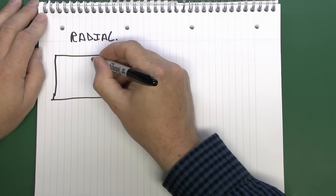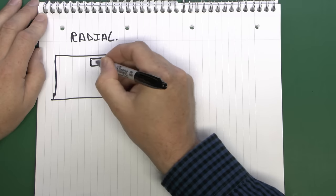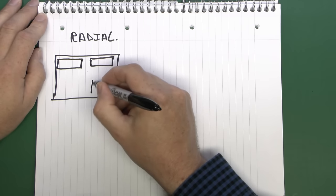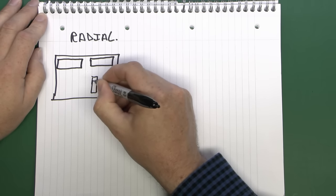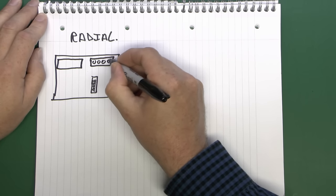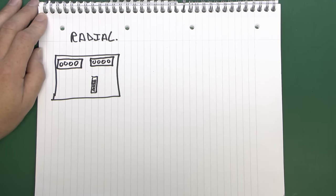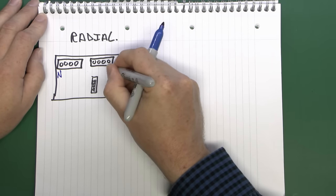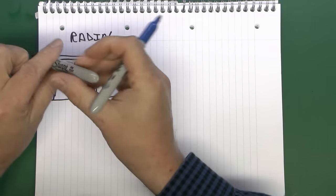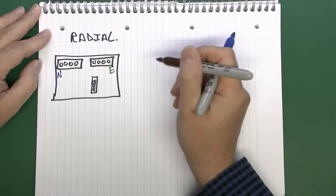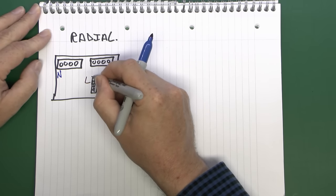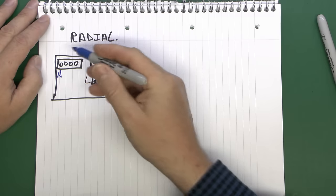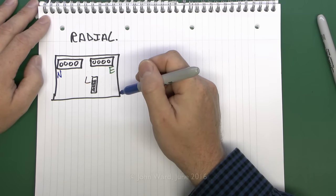In your consumer unit you're going to have several connections inside. You're going to have a bar at the top for the neutral and the earth, and you're going to have several protective devices — we'll just say there's a circuit breaker in here. The line will actually come out of the circuit breaker itself. Typically you'll have a main switch and other stuff in there, so your line connection will be out of the top of the circuit breaker or fuse or whatever you've got.